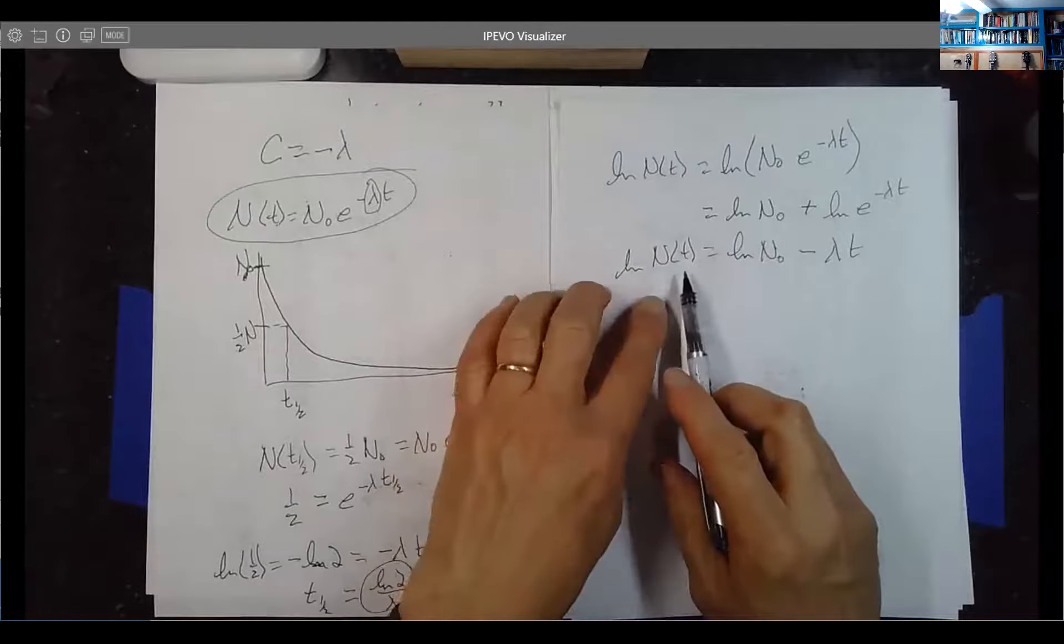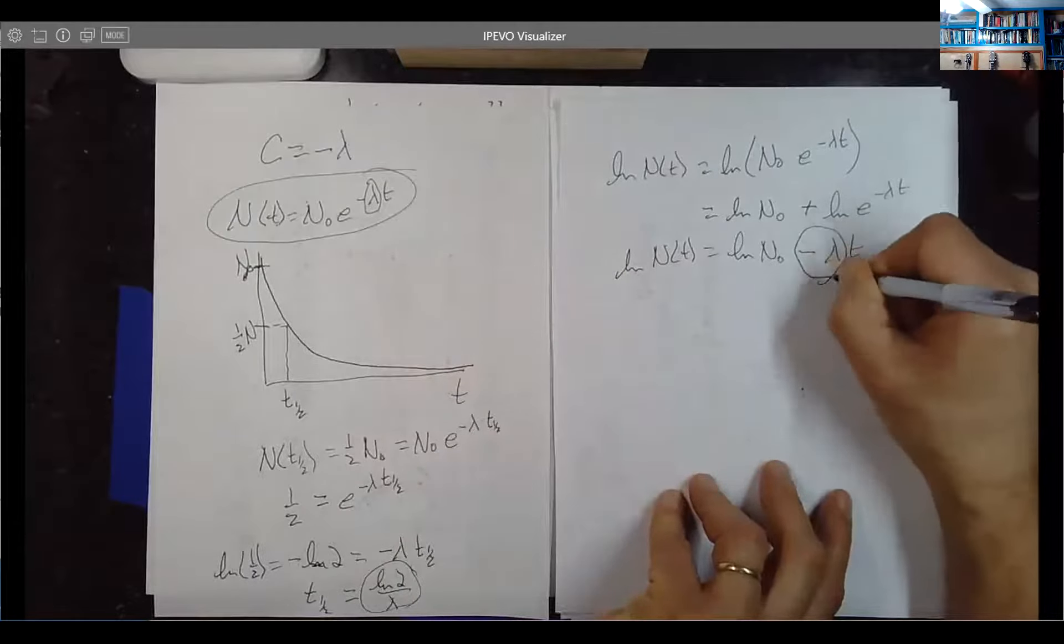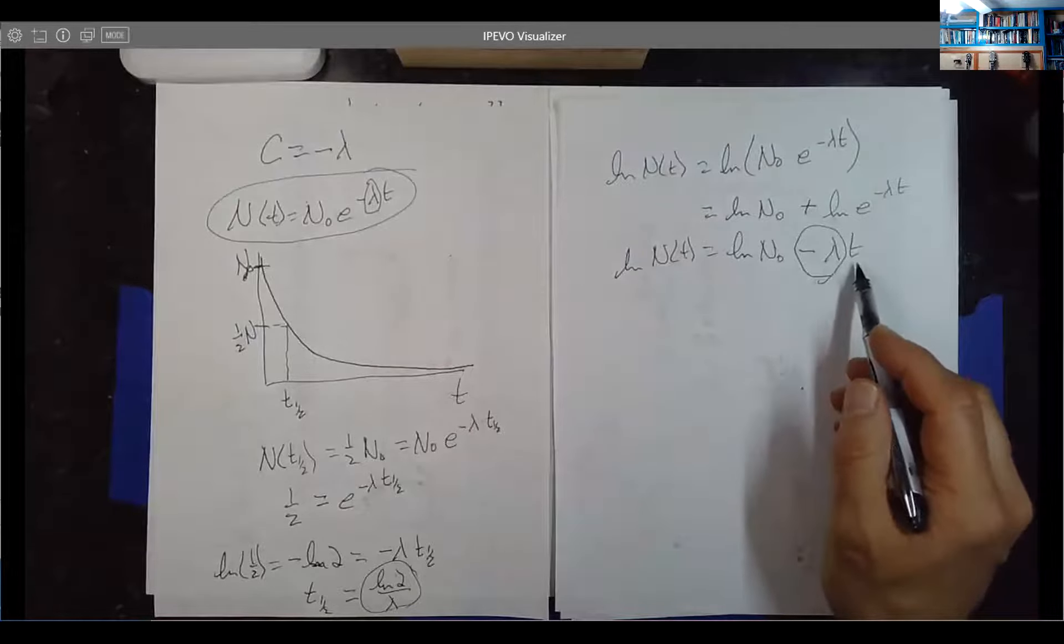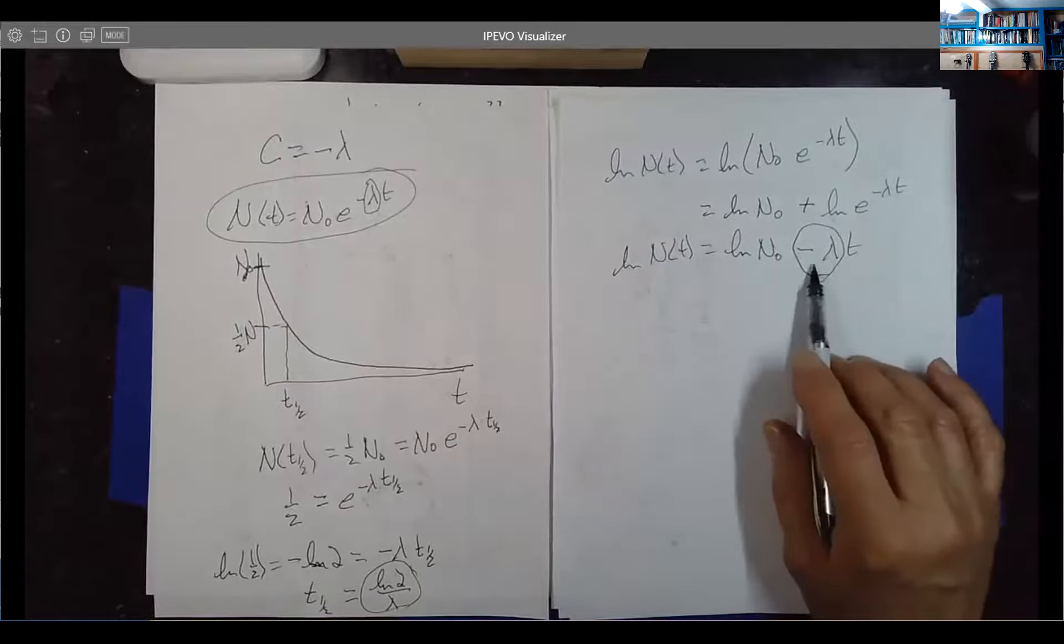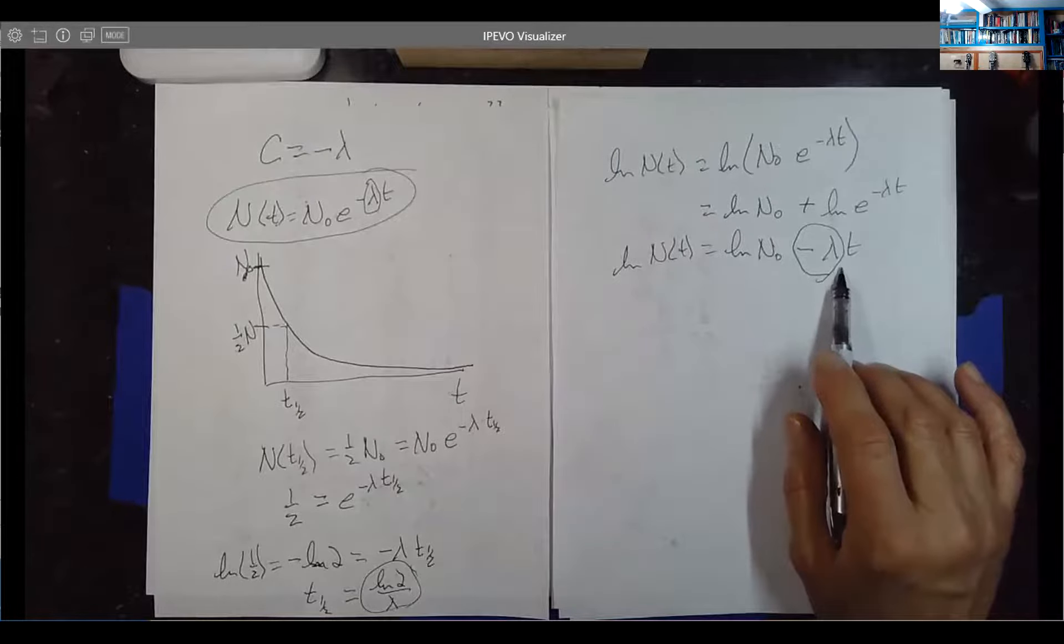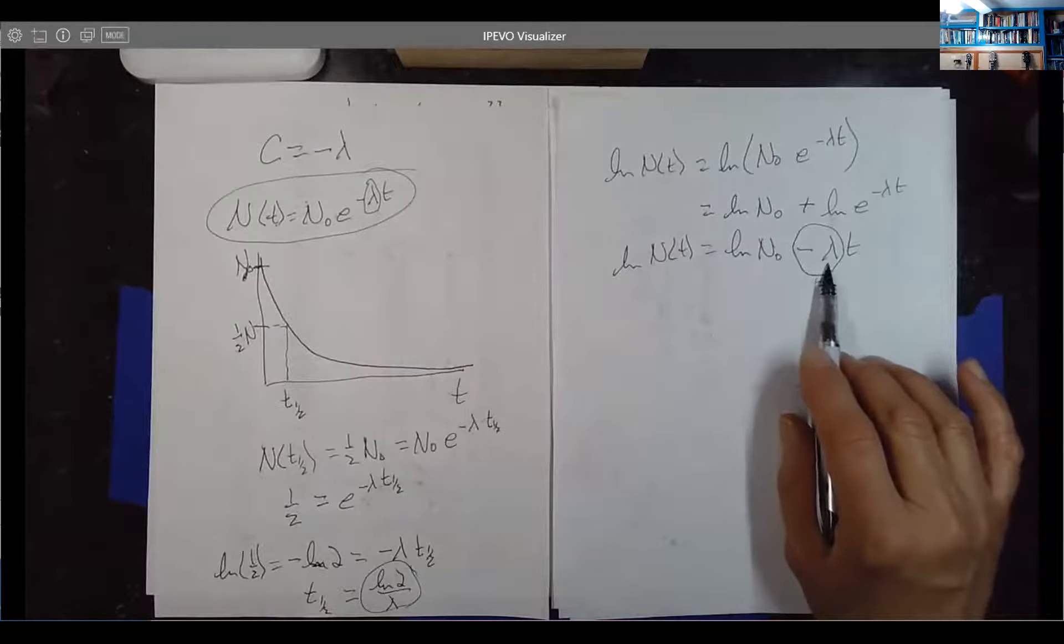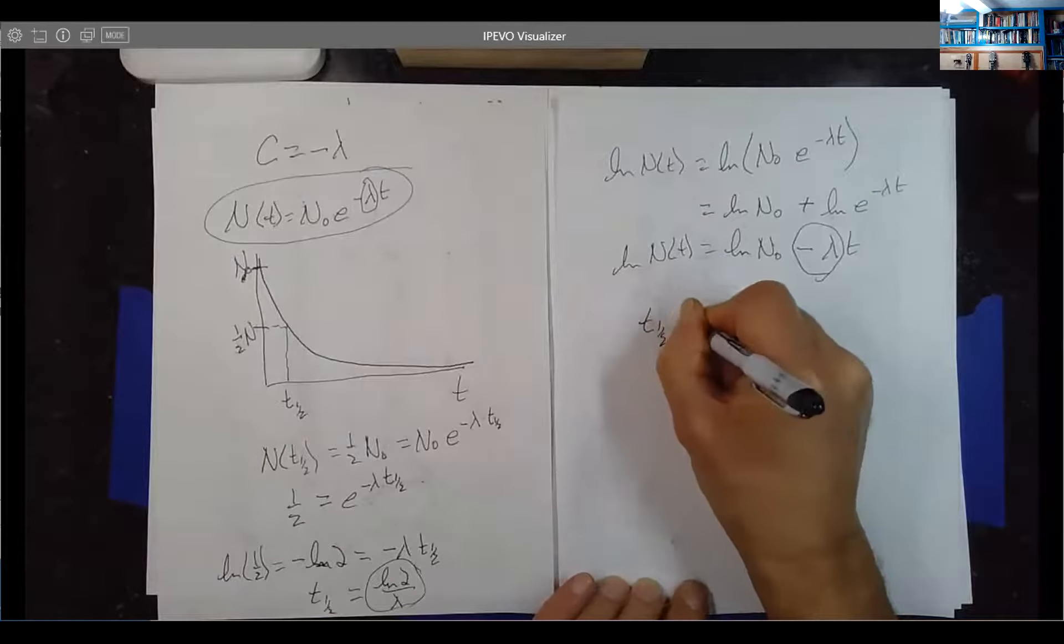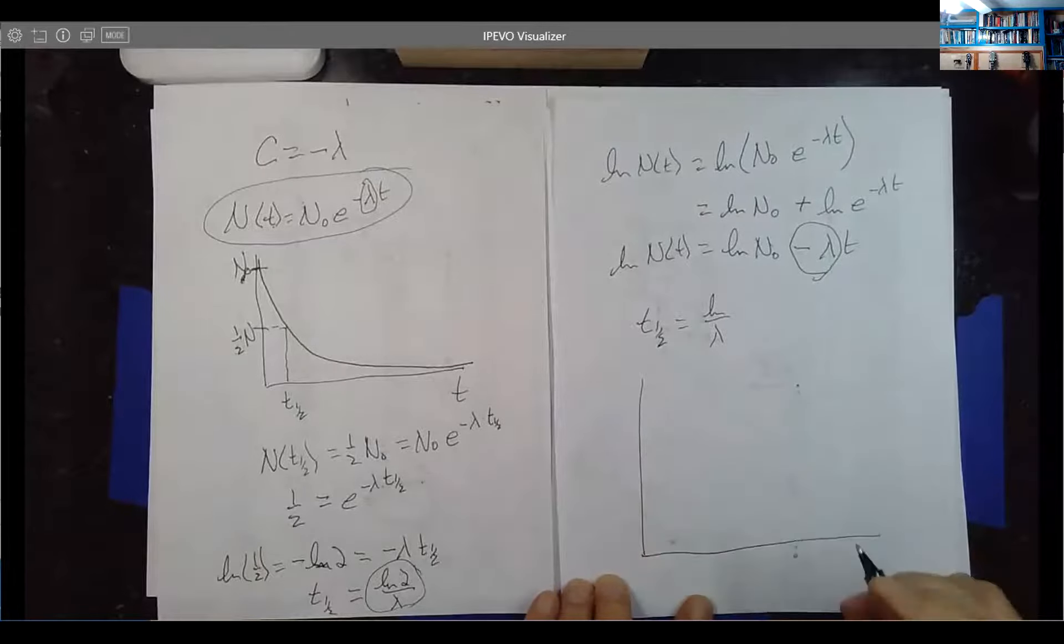If we make a graph of the natural log of the counts that we're getting as a function of time, the slope of that graph will be -lambda. Now the slope of that graph is going to have units of inverse time. This thing's dimensionless, this is dimensionless. It's just a number of counts. The argument of an exponential function has to be dimensionless. And so since this has units of time, and the time is, I think on our data it's days, this will end up being inverse days and the half life T₁/₂ = ln(2)/λ.